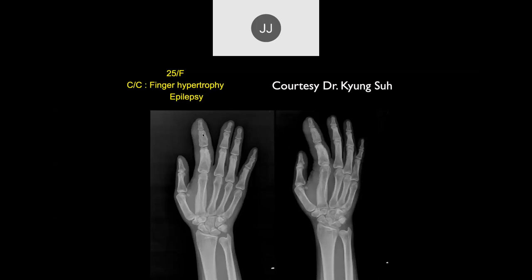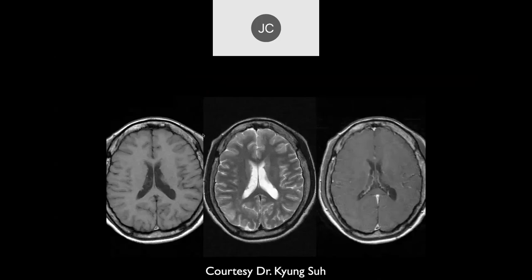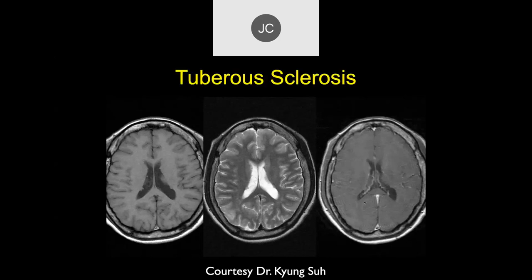They call it sausage finger, specifically in psoriatic disease. This patient had an MR scan of the brain, and looking at the ventricles there are a couple of tiny tuber projections. This is tuberous sclerosis.